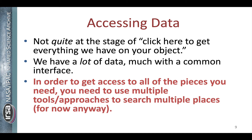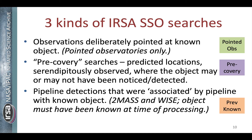We're not quite at the stage of click here to get everything we have on your object. We have a lot of data served with a common interface. To get access to all the data that you need, you're going to have to use multiple tools and approaches to search in multiple places, at least for now. This is an overview of three different kinds of solar system searches. For pointed observations — observations deliberately pointed at a known solar system object and tracked — this only applies for pointed observatories. Then there's pre-covery searches, which given predicted locations, looks for observations that were serendipitously observed of that target. It doesn't tell you whether or not the object was detected, but it was in the field of view. Thirdly, there are pipeline detections that were recognized as moving objects and associated by the pipeline with a known object.